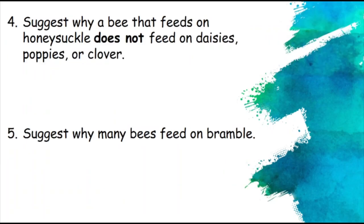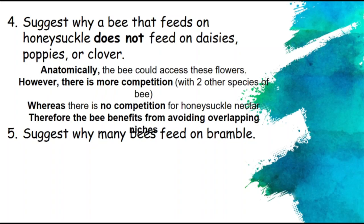A bee that feeds on honeysuckle does not feed on daisies, poppies, or clover because, although anatomically the bee could access those flowers, there is more competition there from other species of bees, whereas there is no competition for honeysuckle nectar because not many bees have a tongue long enough. The bee benefits from avoiding these overlapping niches — if all bees fed on daisies, poppies, and clover, many species could easily outcompete each other.